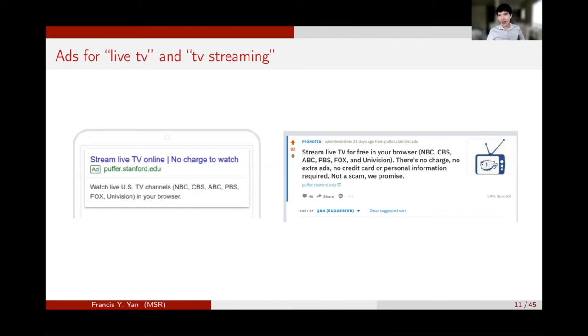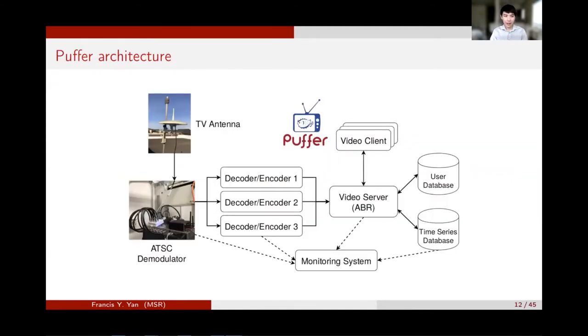To recruit users, we purchased ads on Google and Reddit for keywords like live TV. For example, New York Times recommended Puffer to those who need free TV service to watch at home during the pandemic. As of today, we have attracted more than 130,000 real users across the US.